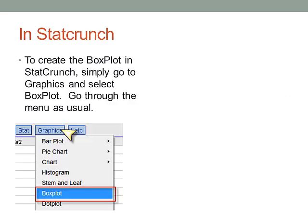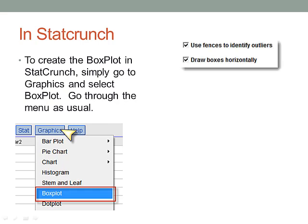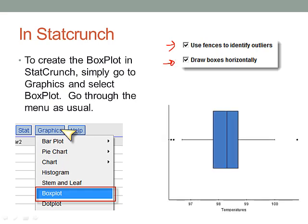To create the box plot in StatCrunch, go to Graphics, select Box Plot, and then go through the menu as usual. Just make sure you select to use fences to identify outliers, and then draw the boxes horizontally as an option you can select. It doesn't really matter.